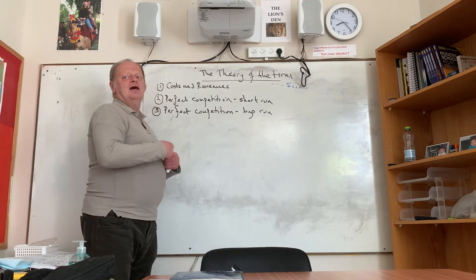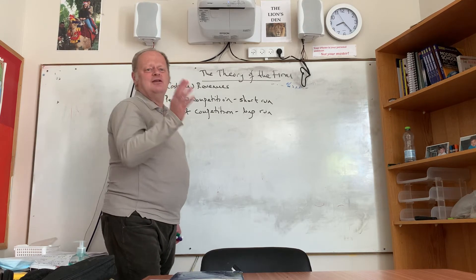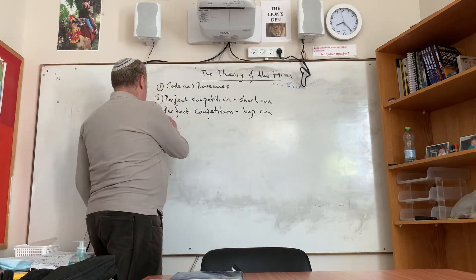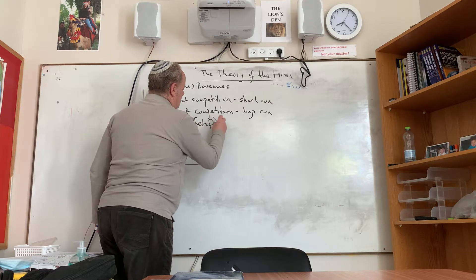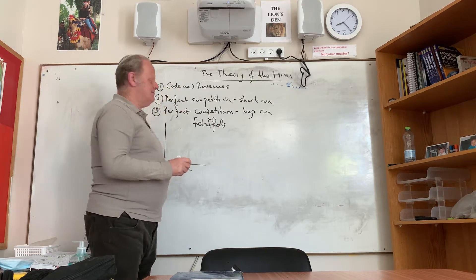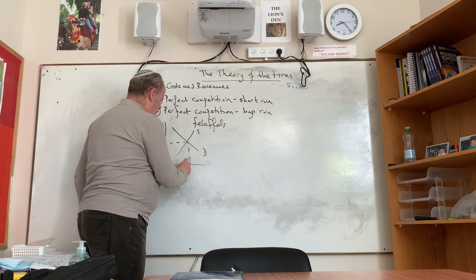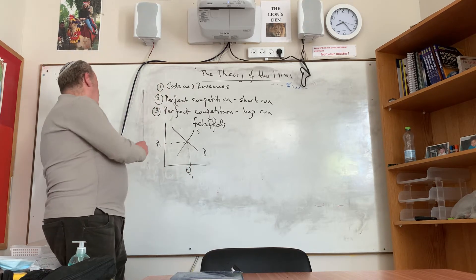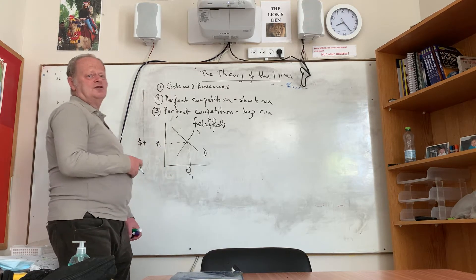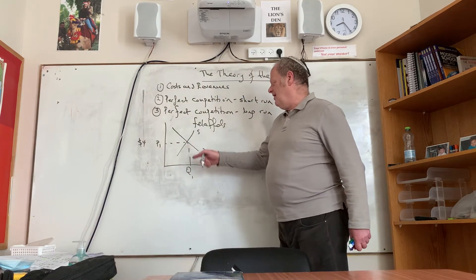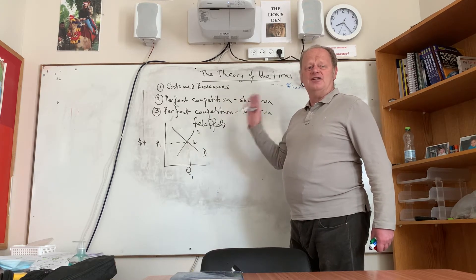Let's look at revenues first — that's the easy bit. We need to know the relationship between the industry and the firm. The industry works like this: you've got your demand and your supply — that's falafels in town. And let's say the equilibrium value of a falafel is $4. That is the equilibrium price set by the industry for falafels in the city.